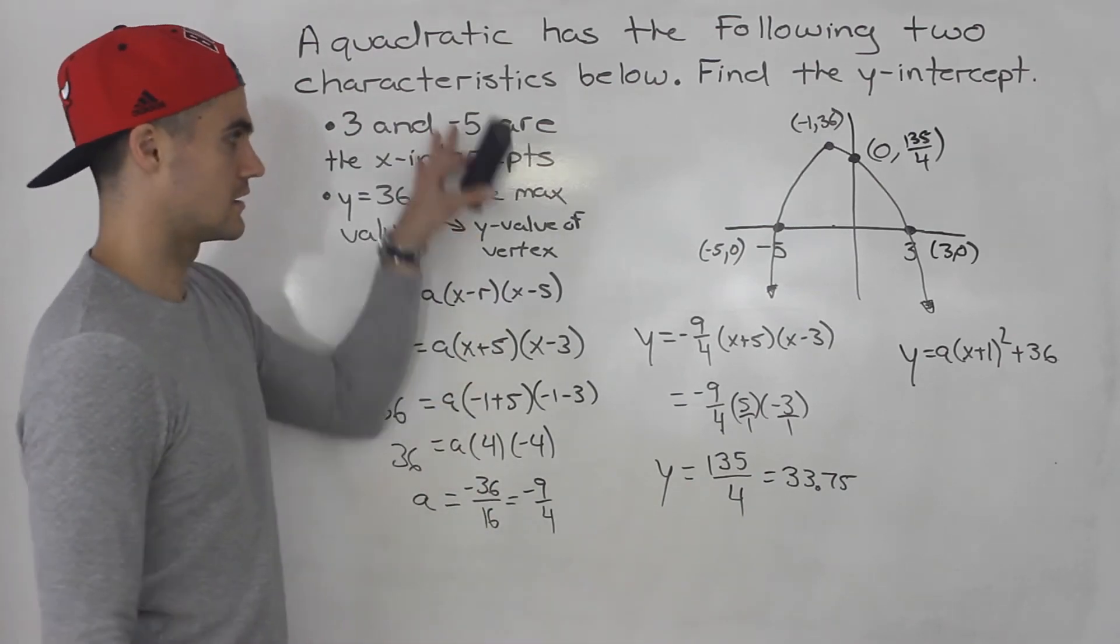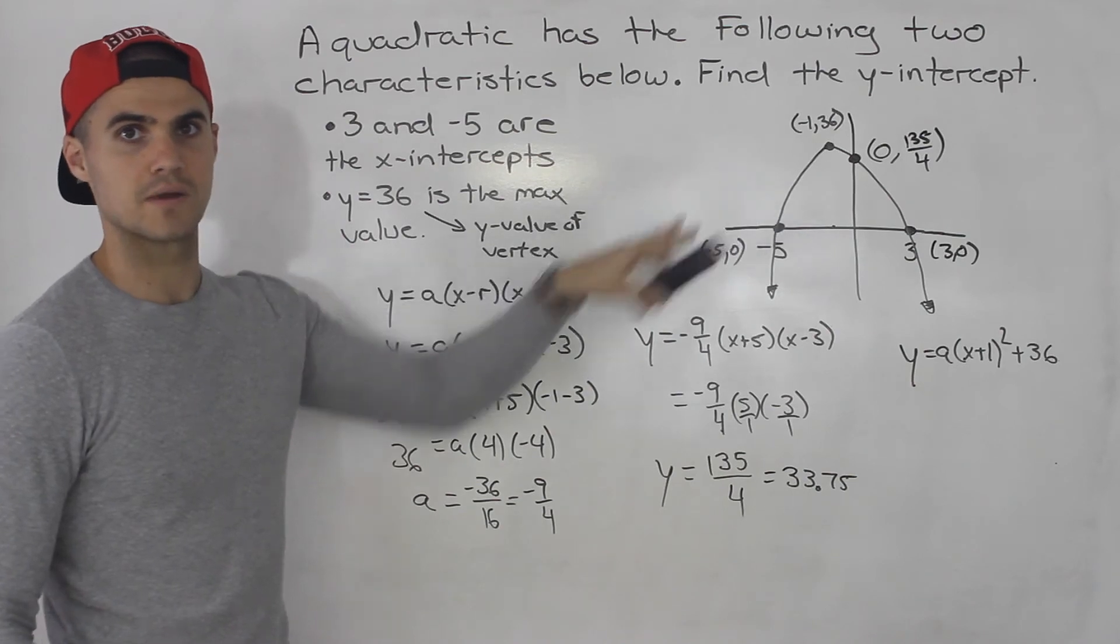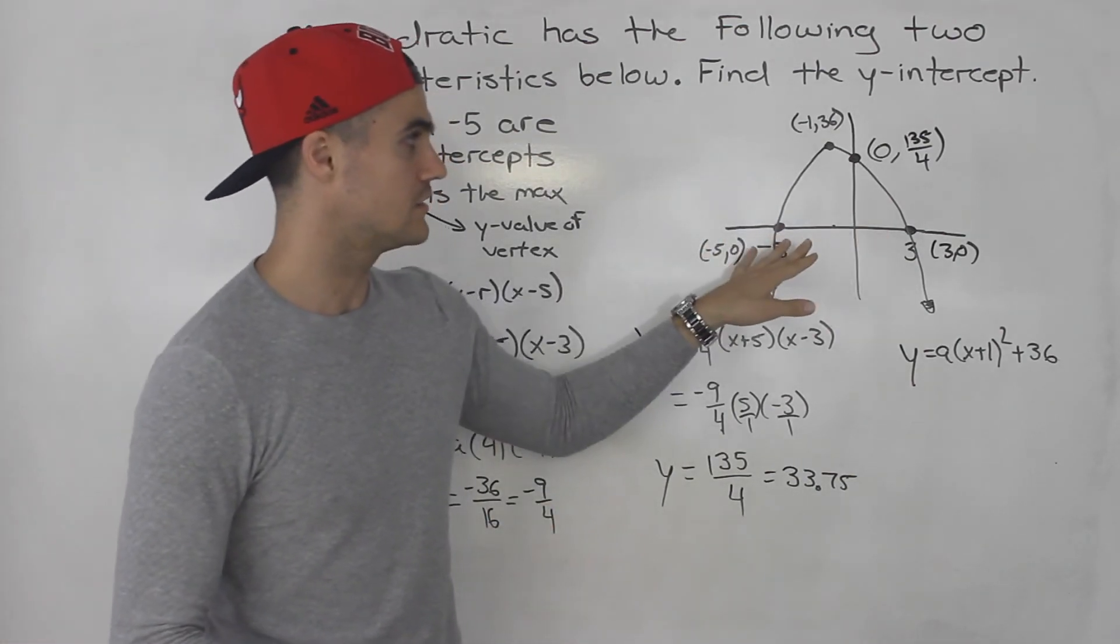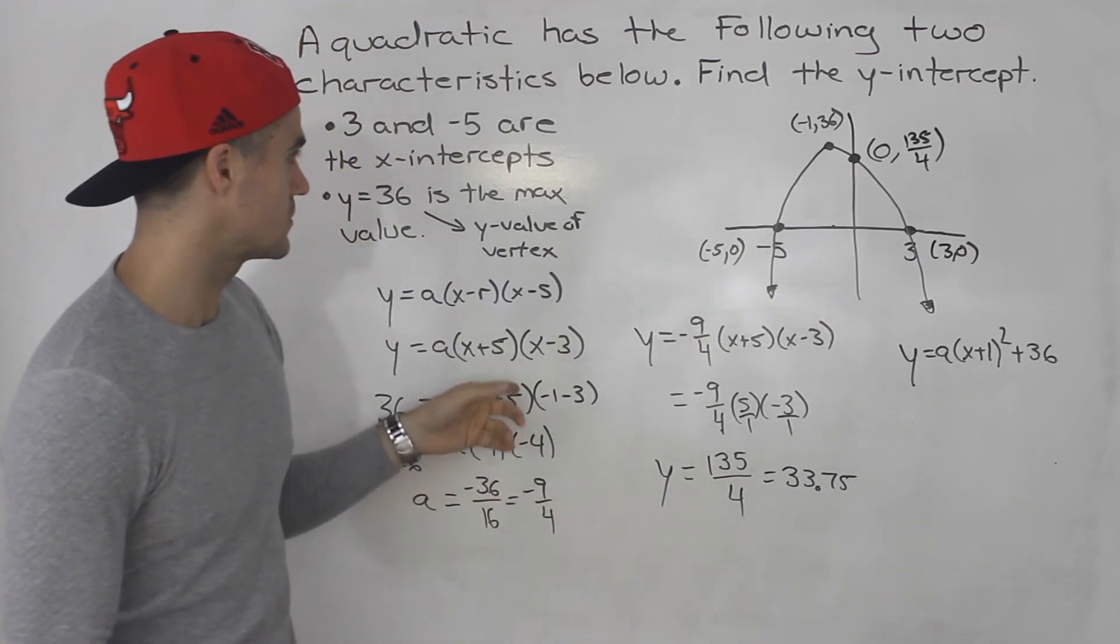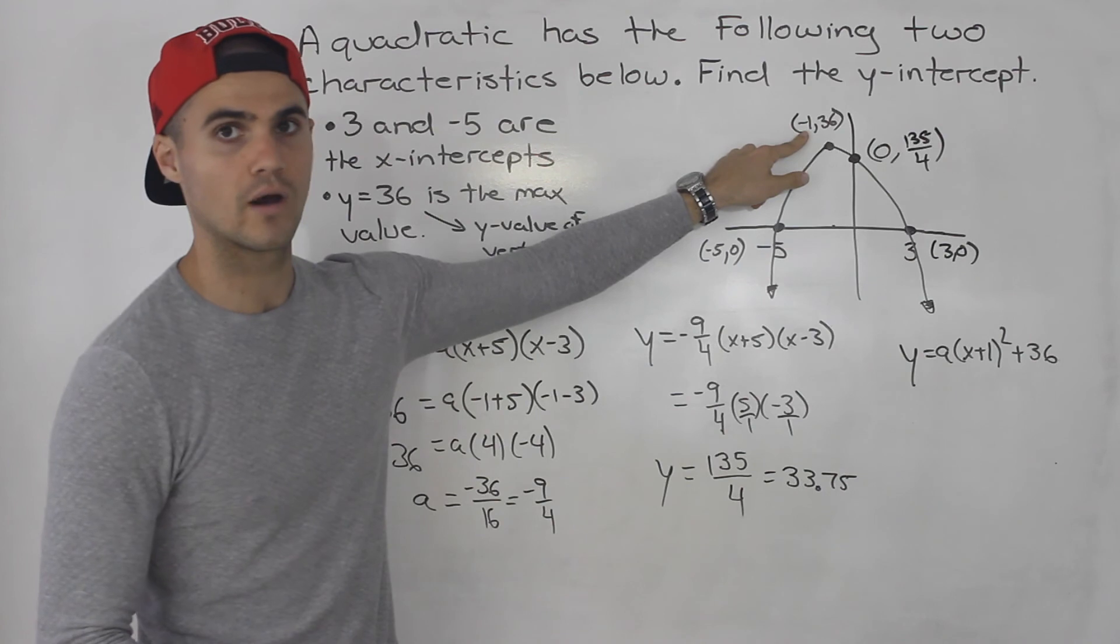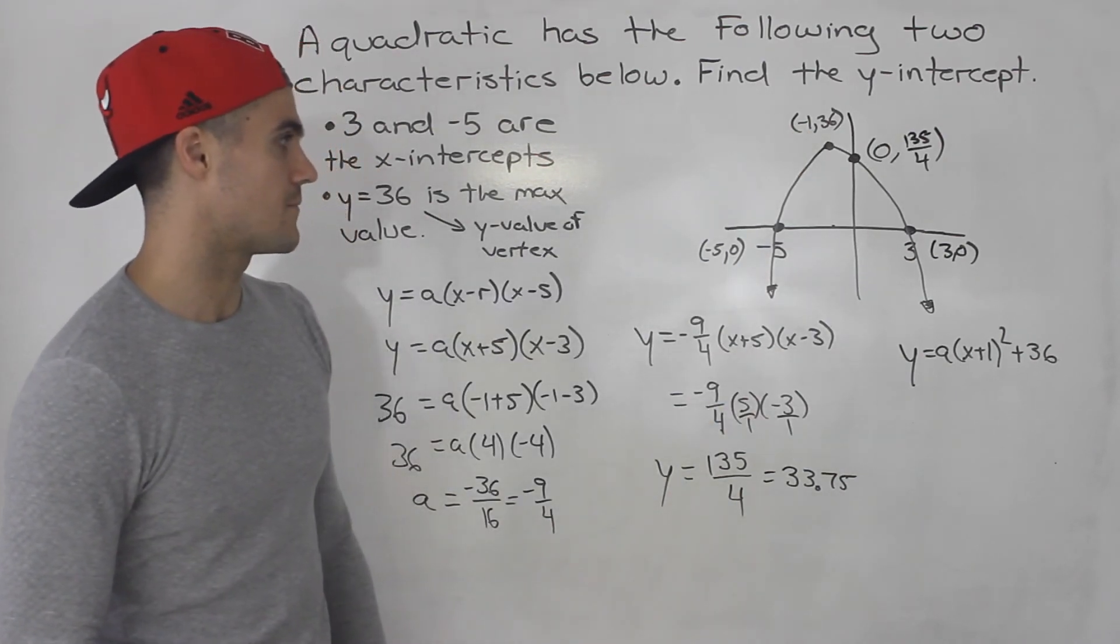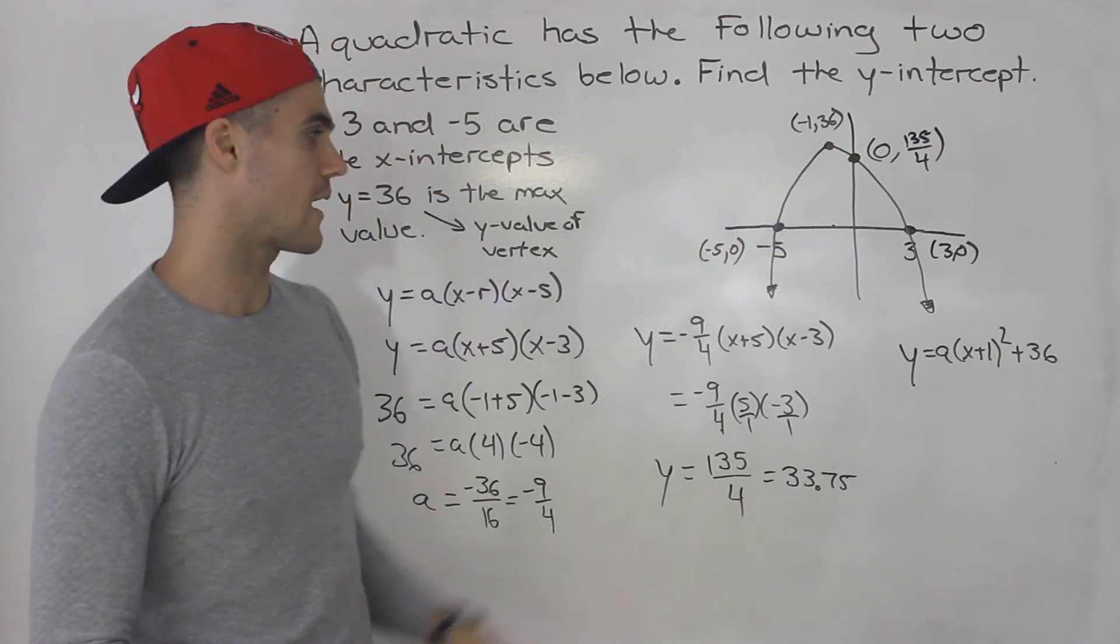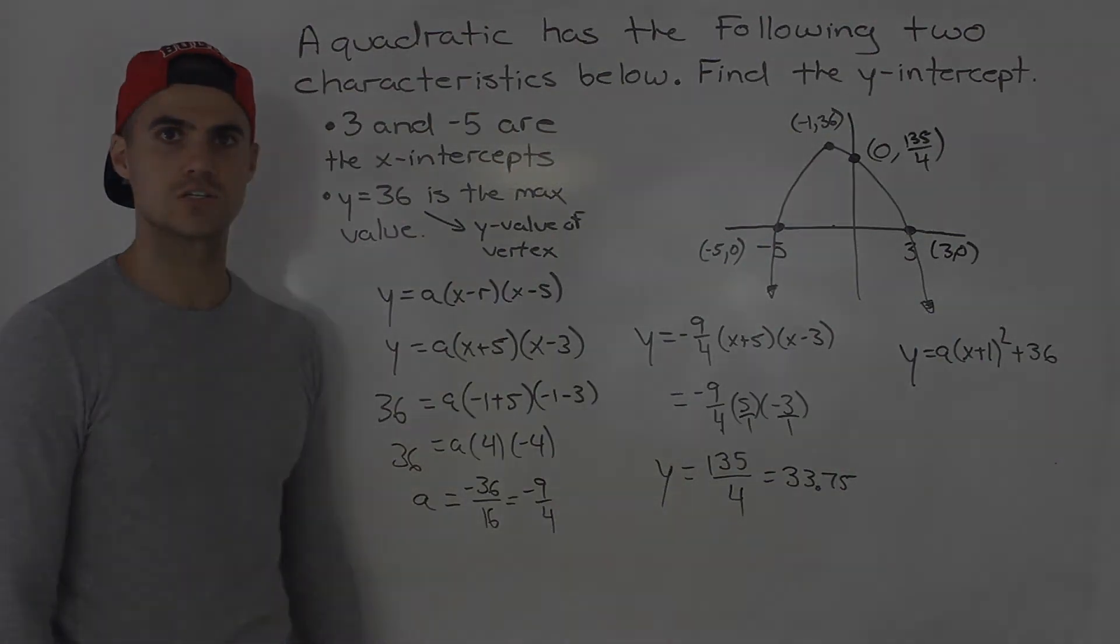So, when you get a question like this, quadratic given characteristics, graph as many characteristics as possible. And even from the characteristics you're given, try to get more characteristics, if you can, without doing any algebra. So, in this case, we were able to get that negative 1 value for the x value of the vertex. And then once you have everything that you possibly can in your graph, then go into making your equation, the process will be a lot smoother.